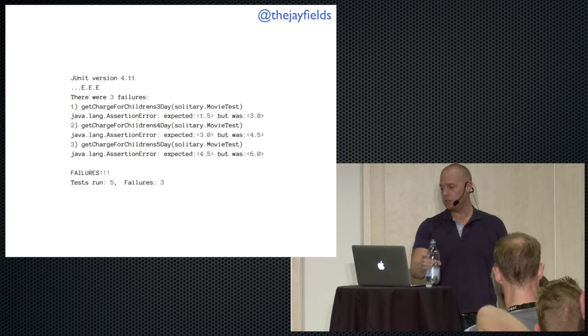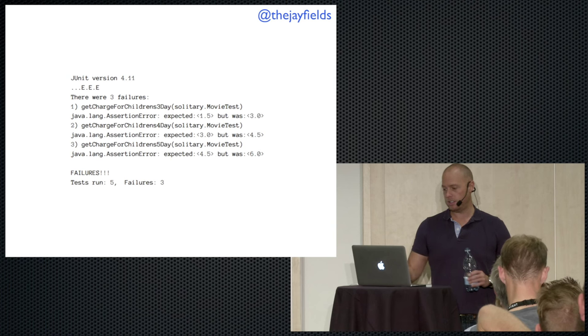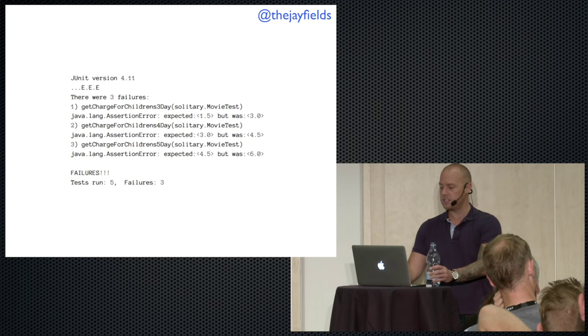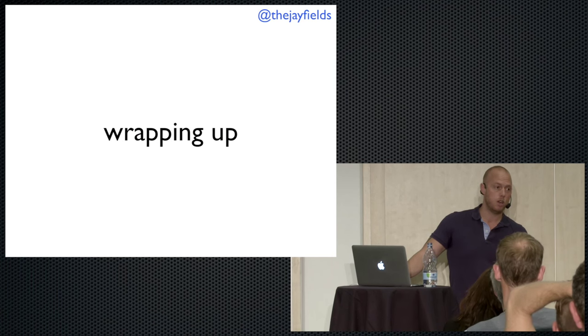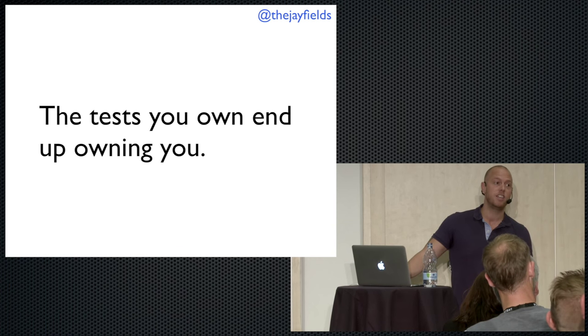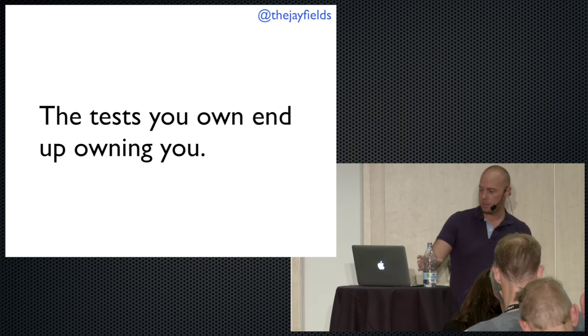The expected and return values give you valuable information per test. The sum is better than the parts. Every time you write multiple assertions, you're suppressing valuable information — not just for you, but more importantly for teammates who come without context. The tests that you own end up owning you. There are so many examples of this.